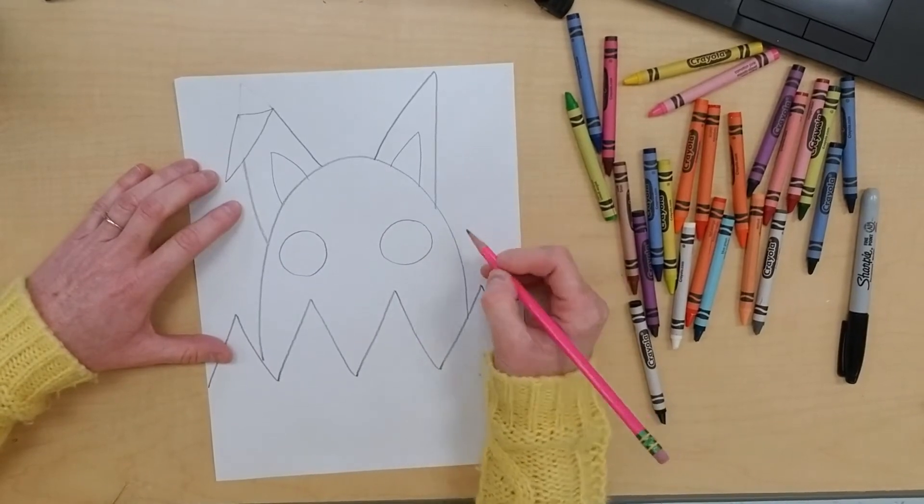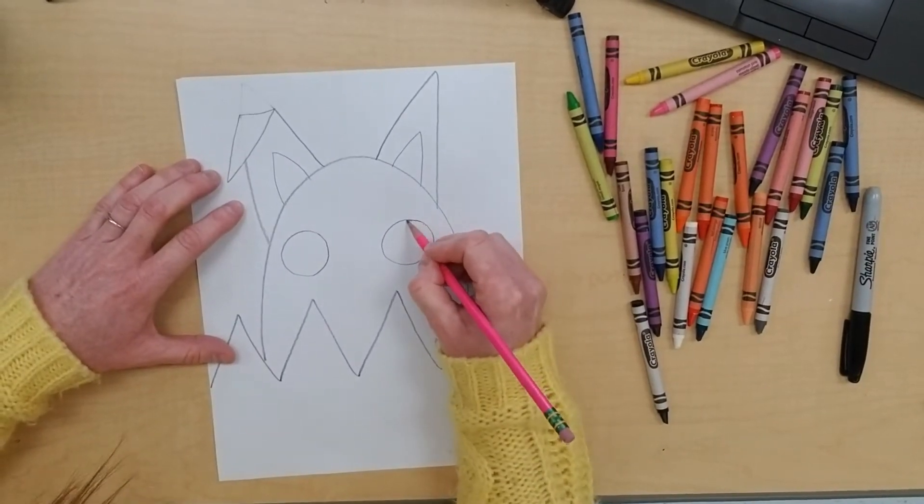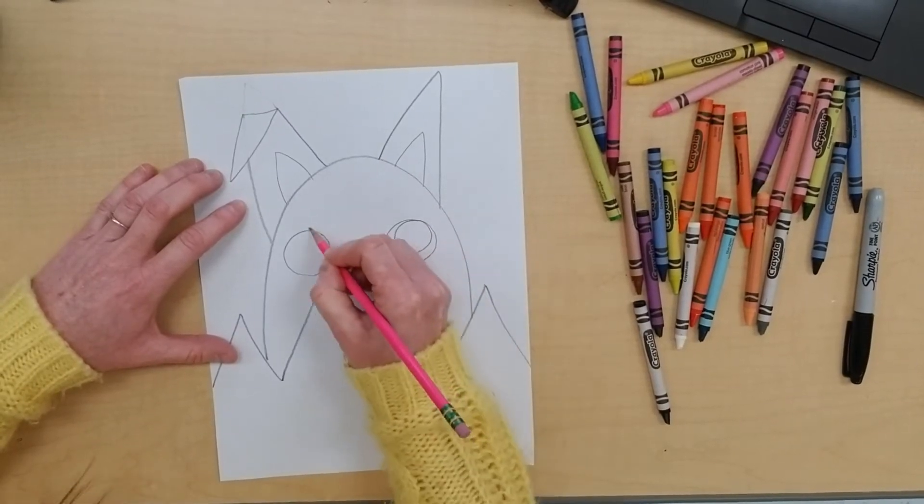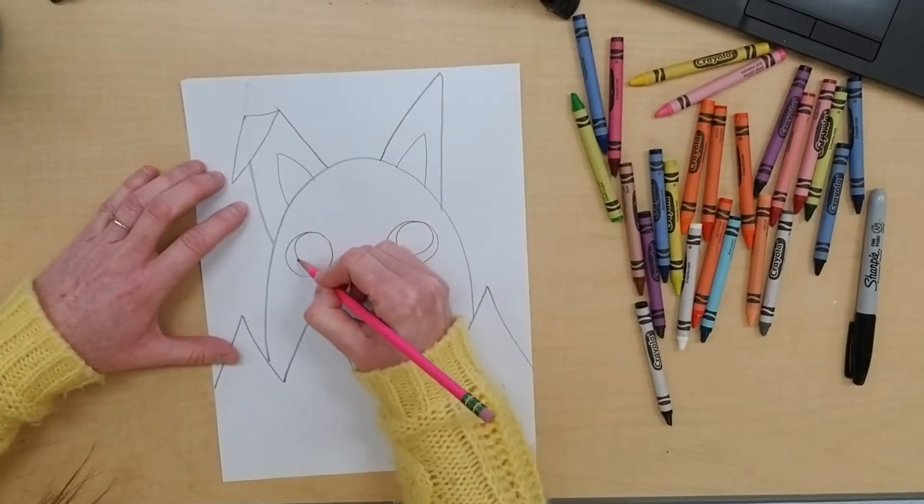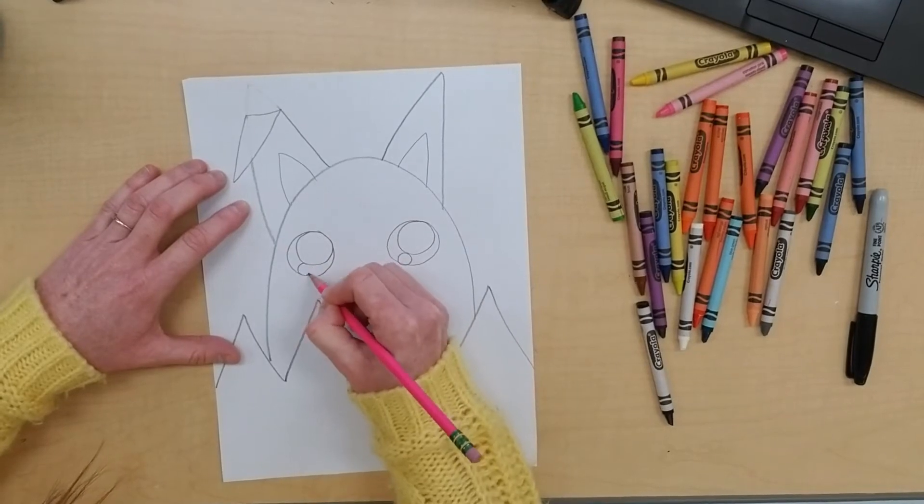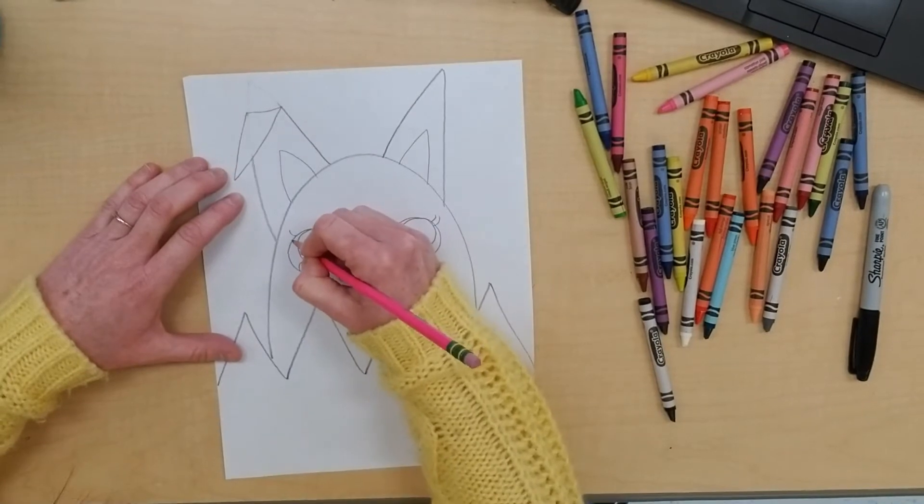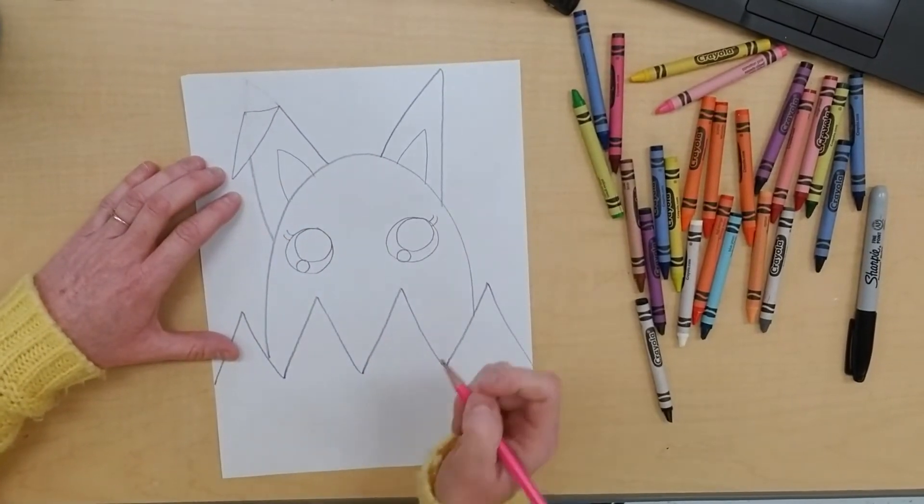draw three circles all together, so one big one, one medium, and one small. All right, one big one, one medium, and one small. And then if you want, you can add eyelashes, but you don't have to.